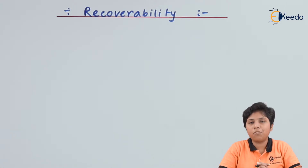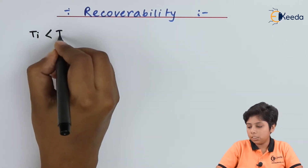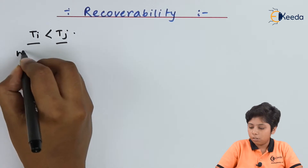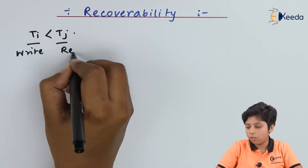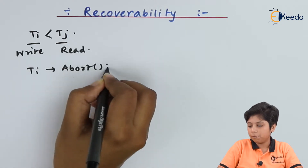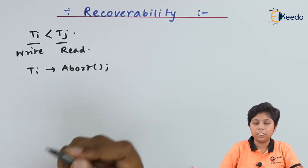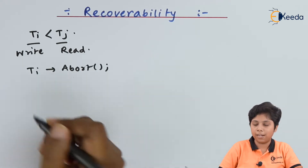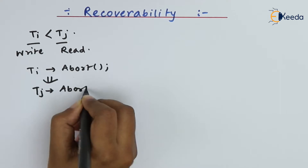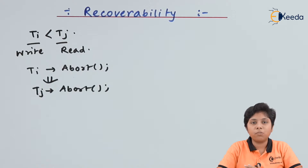We can decide recoverability on this condition: if Ti is preceding Tj and Ti has made a write statement that Tj is reading, meaning the write on Ti is being read by Tj, and now Ti goes for an abort, then Tj must also be aborted so that recoverability is satisfied. This is known as recoverability.